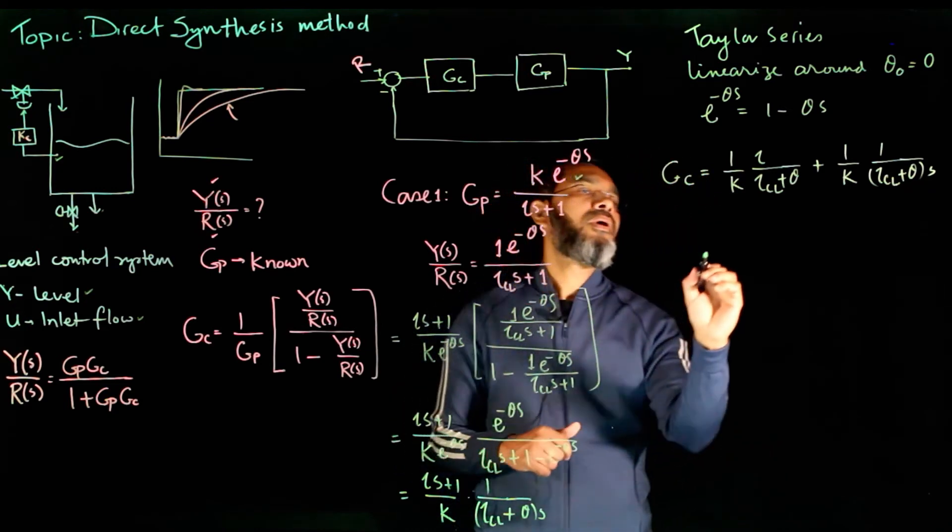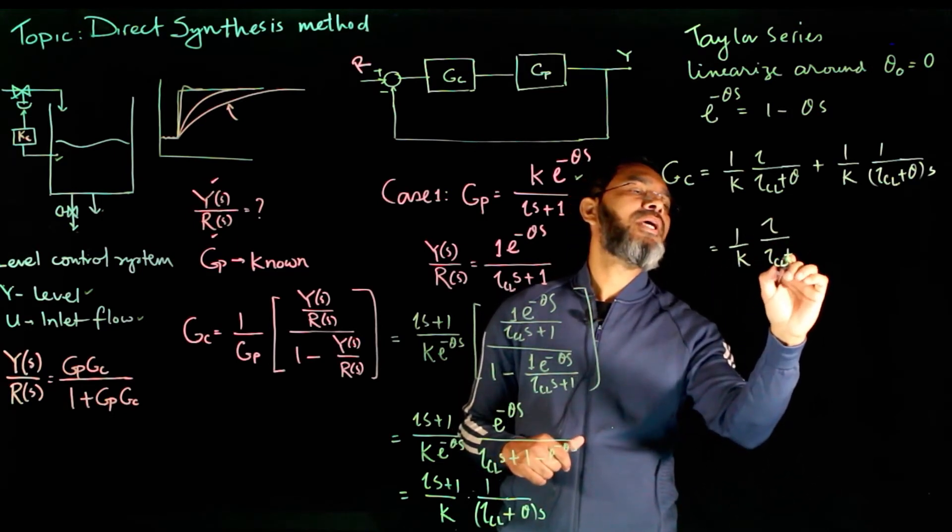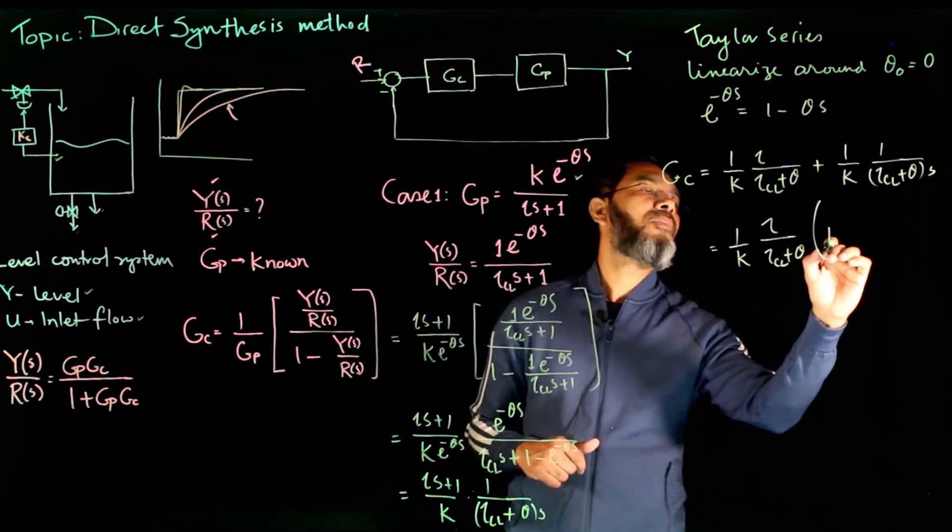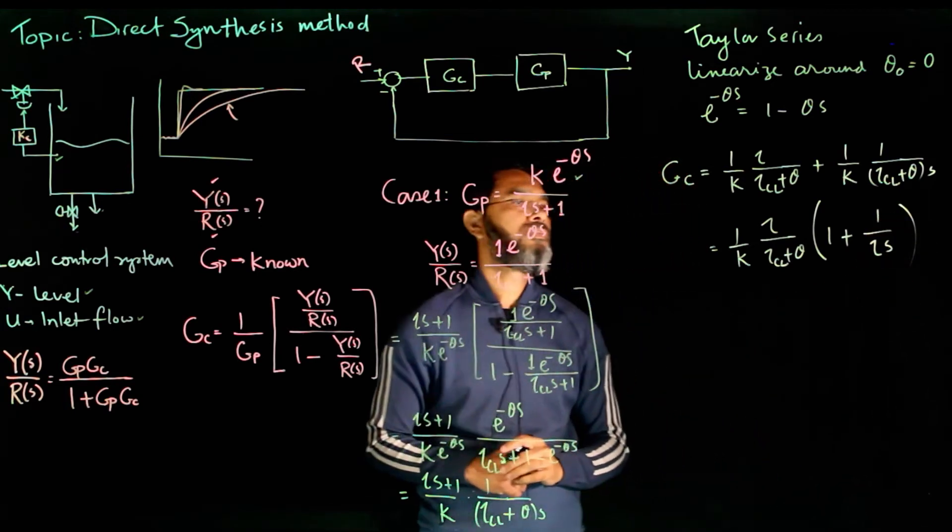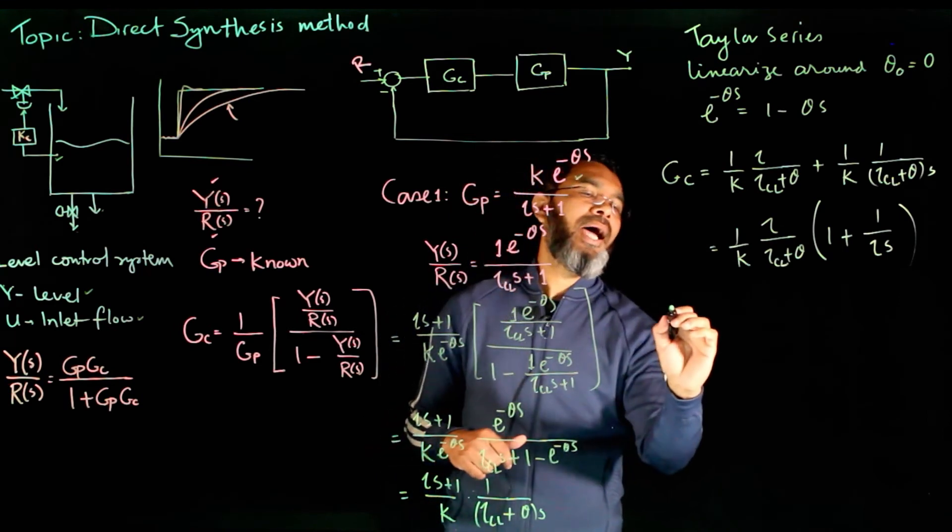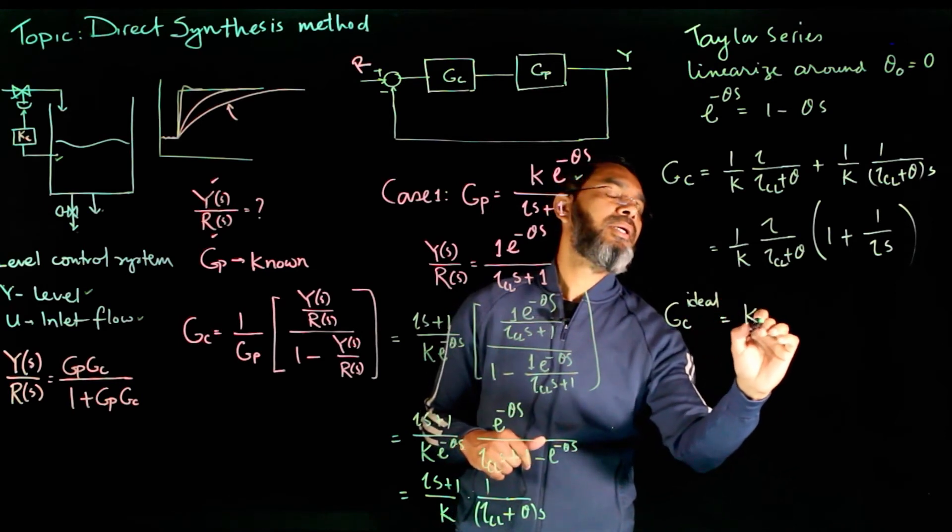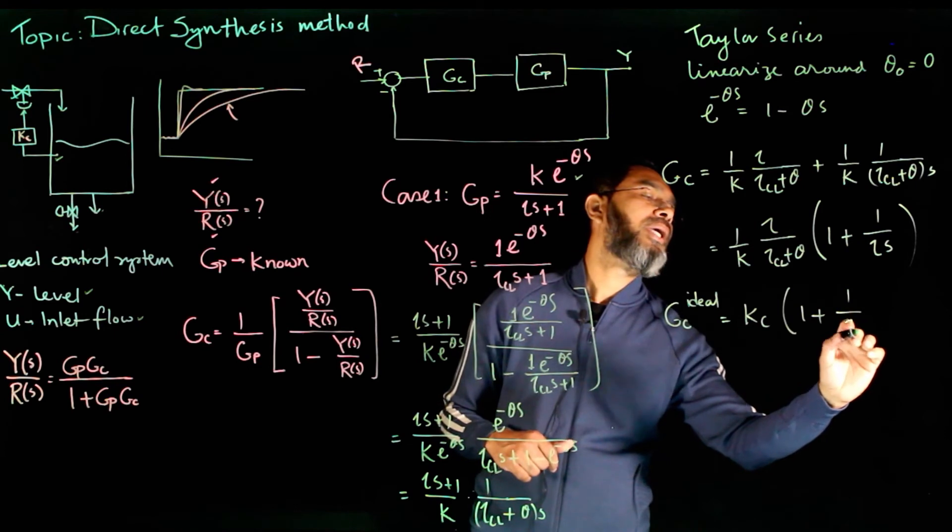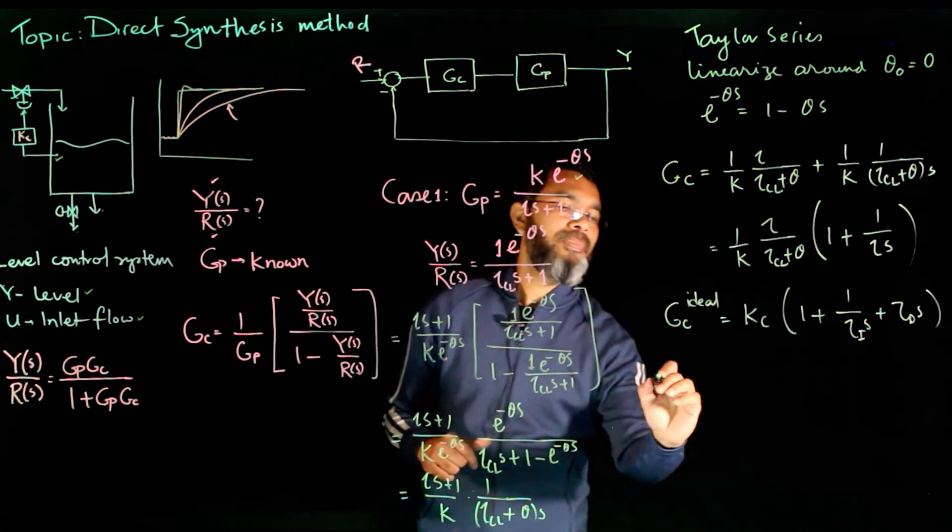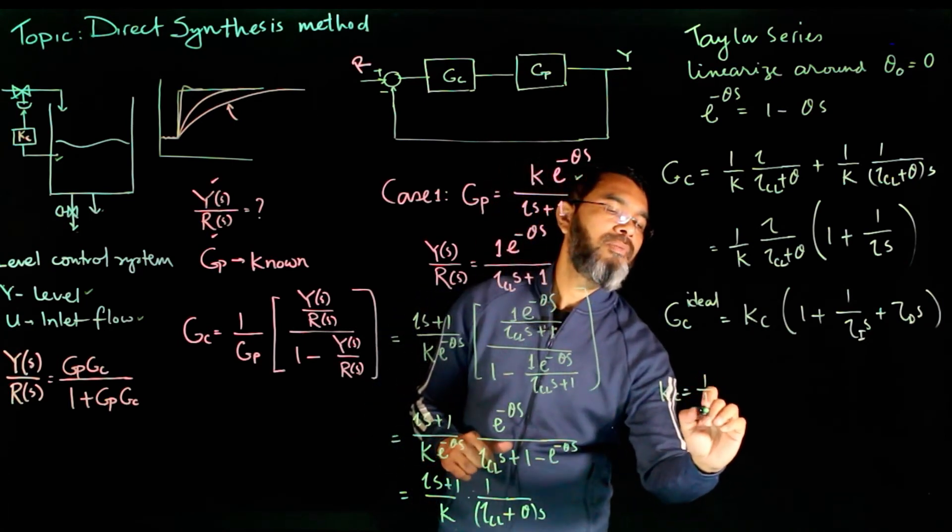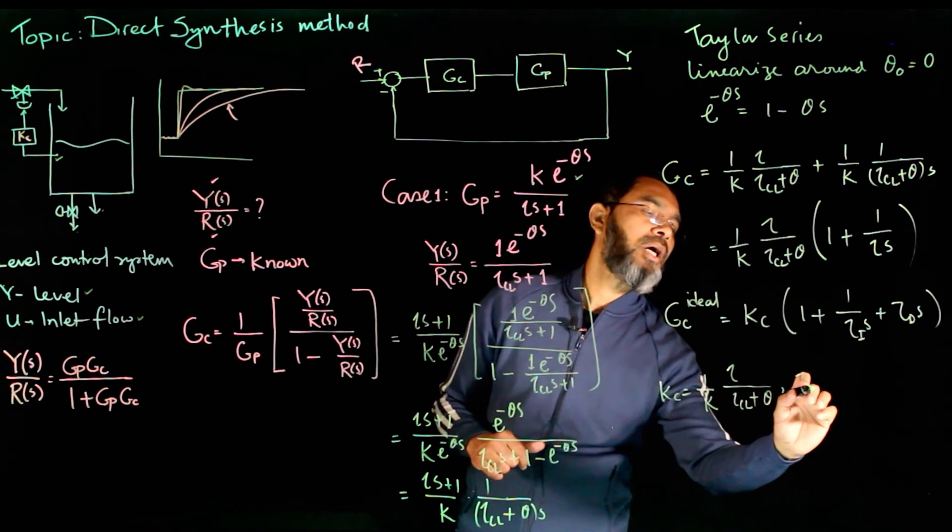Now write it in the standard form. Taking 1/k times τ/(τ_cl + θ) out, we have 1 + 1/(τs). Now compare this with the ideal form, the PID controller: Kc(1 + 1/(τ_I s) + τ_D s). We have Kc to be 1/k times τ/(τ_cl + θ), and τ_I equals τ.